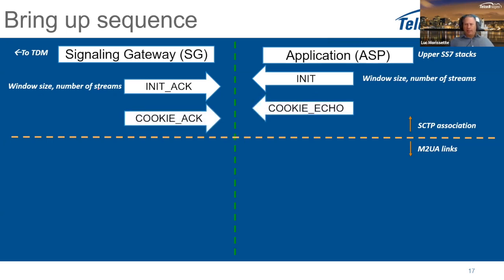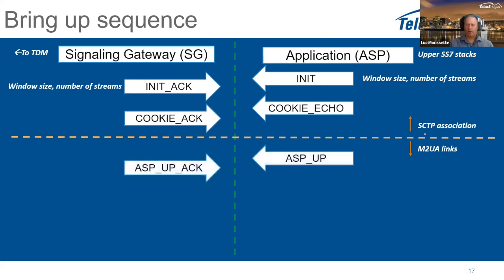After the INIT, a cookie echo and cookie acknowledgment are exchanged. Once that is done, the SCTP association is up and ready. Then it starts bringing up the M2UA link, signaling readiness. If the signaling gateway accepts, the process continues. This is the global M2UA connection information for that SCTP association — per SCTP association you will have different M2UA links coming up.